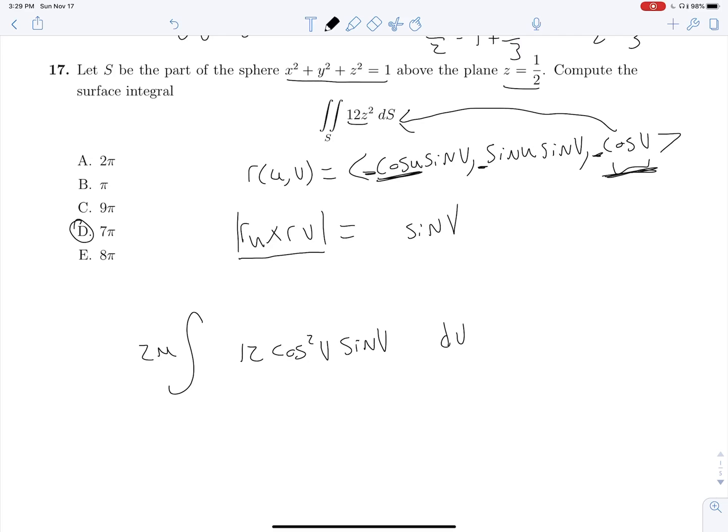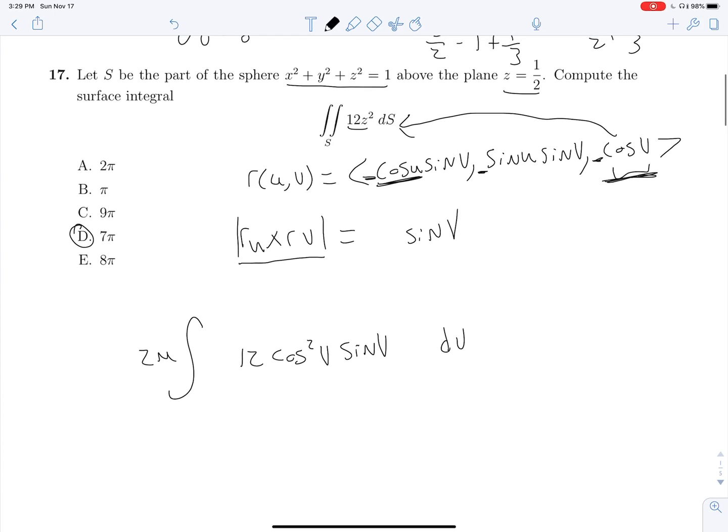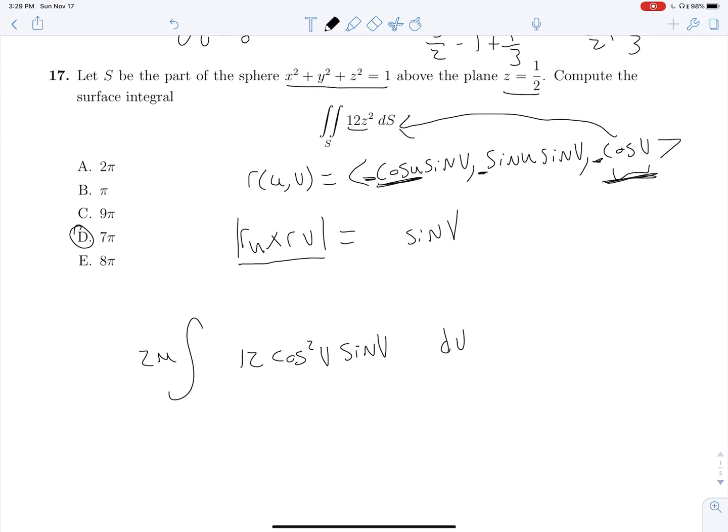And then we know that we are bounded below by Z equals 1 half. Well, if Z equals 1 half, we know that Z is equal to cosine of V, so 1 half equals cosine of V, so the inverse cosine of 1 half is V, and this is pi over 3. And since we know that this is analogous to phi, phi is going to run from 0 down to pi over 3 for our surface.